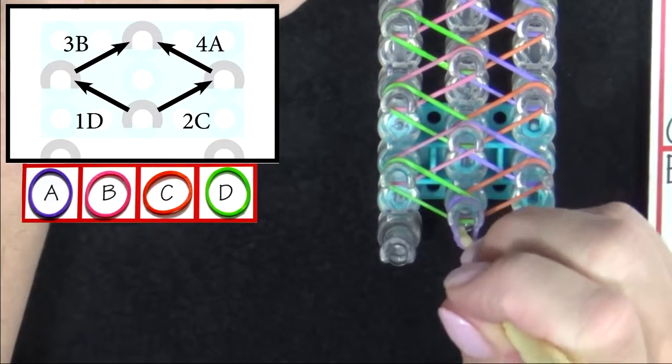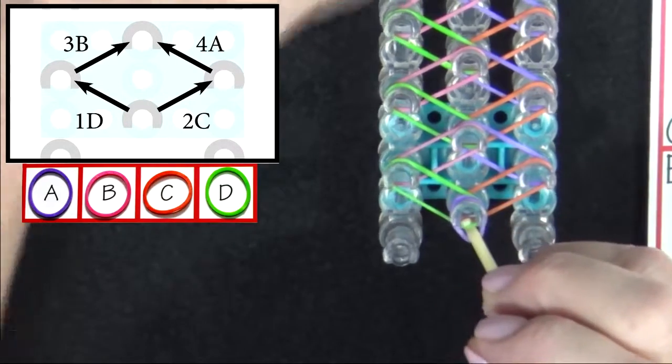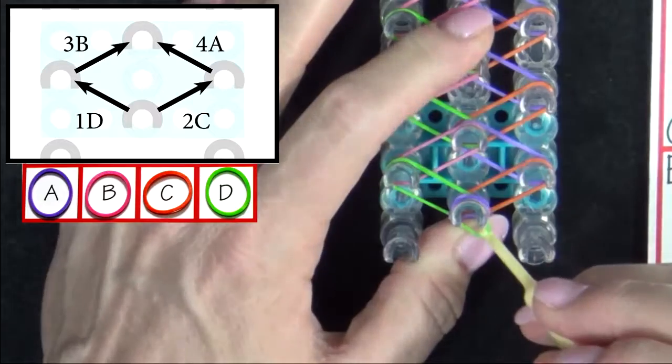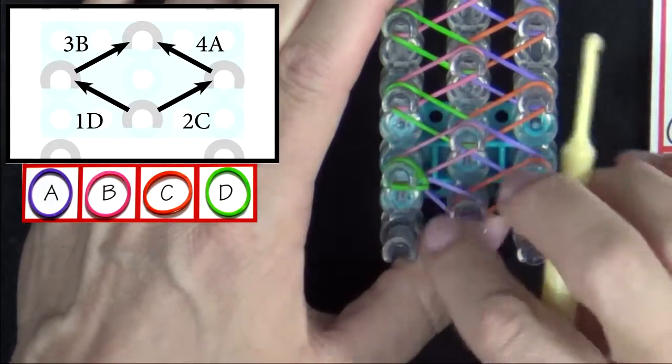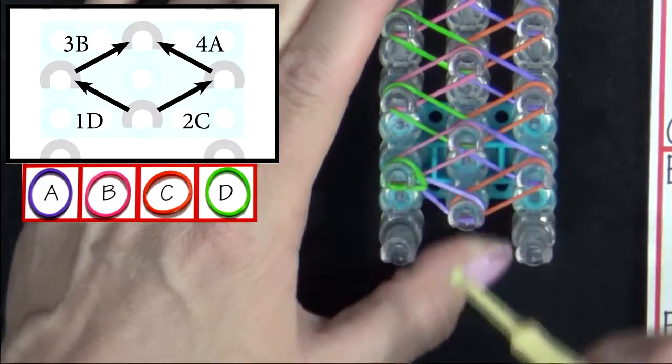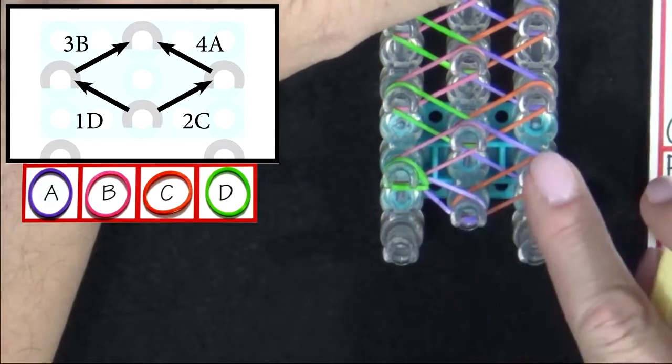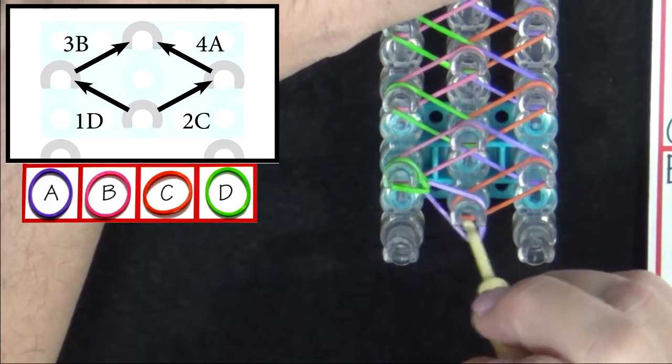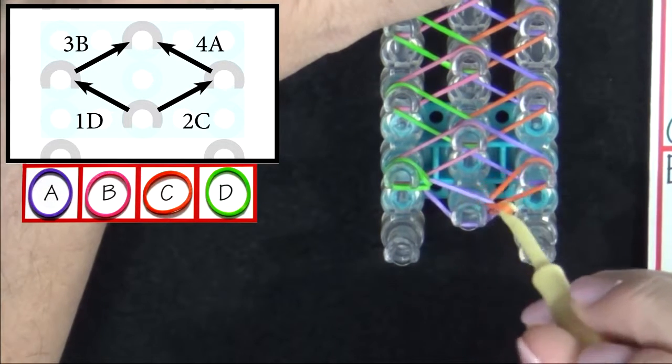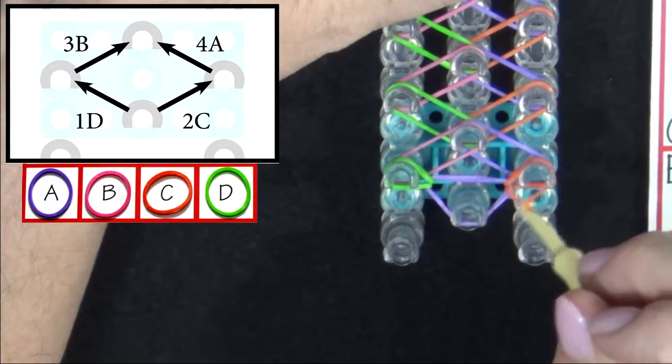You'll use your hook to pull back the cap band and grab band 1D. Hold the cap band down with your thumb and loop the band out to the left side. It will form that teardrop shape. Band 2C will be looped next. Pull back the cap band with your hook. Grab that band and pull it to the right.